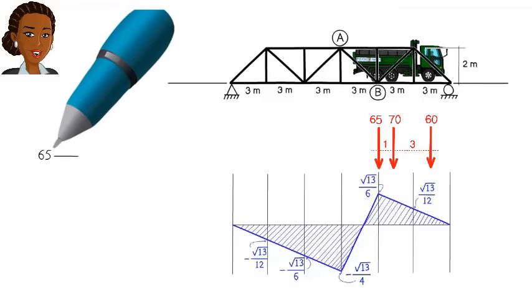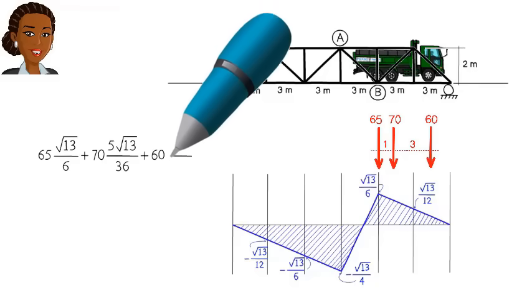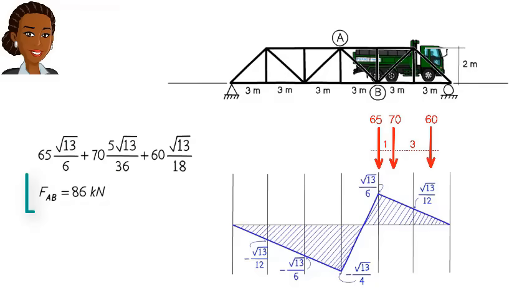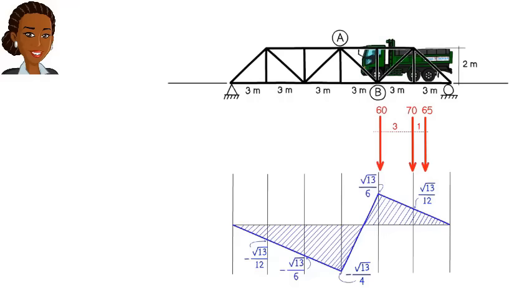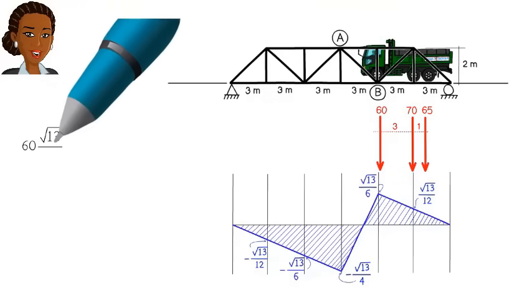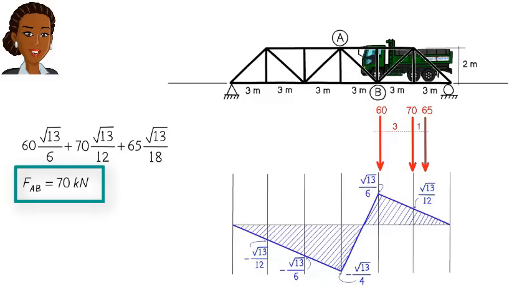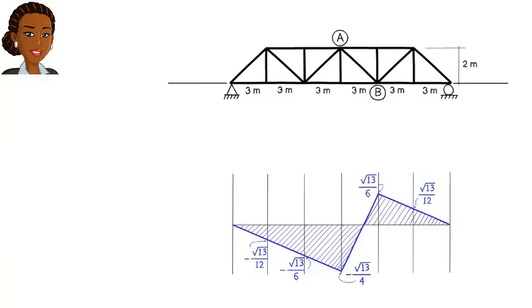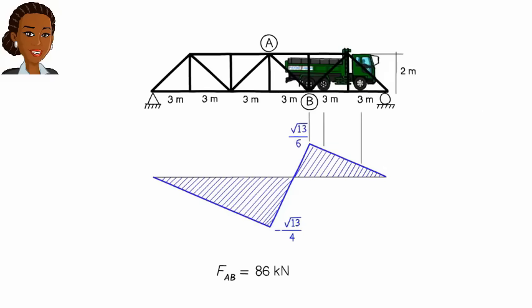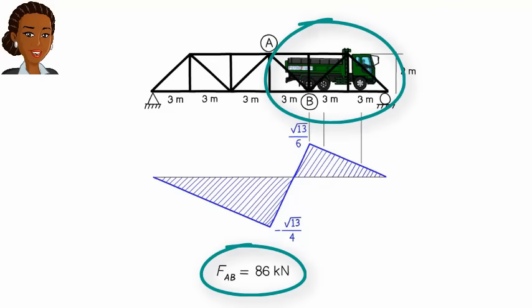For scenario one, we can calculate the tensile force in AB like this. For scenario two, we get a tensile force of 70 kilonewtons. Since there is no other loading scenario that could produce a larger tensile force in AB, we can therefore conclude our analysis by stating that the maximum tensile force in AB is 86 kilonewtons. This force develops when the truck is in this direction and location.